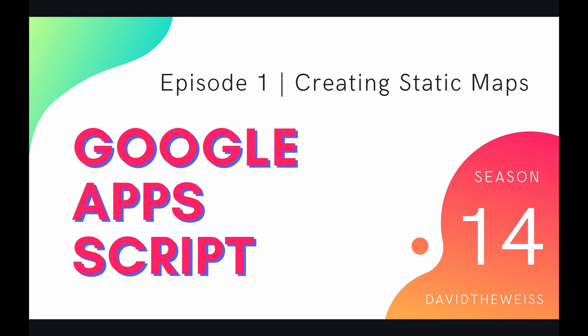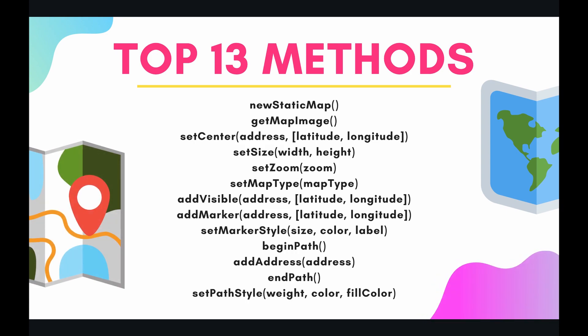Hey coders, welcome to episode 1 of our map service playlist on the Google App Script course. In today's lesson we're going to learn how to create static maps using the map service. There are a lot of different methods at your disposal, but I've identified my top 13 which I use most frequently and believe have the greatest utility: newStaticMap, getMapImage, setCenter, setSize, setZoom, setMapType, addVisible, addMarker, setMarkerStyle, beginPath, addAddress, path, and setPathStyle.